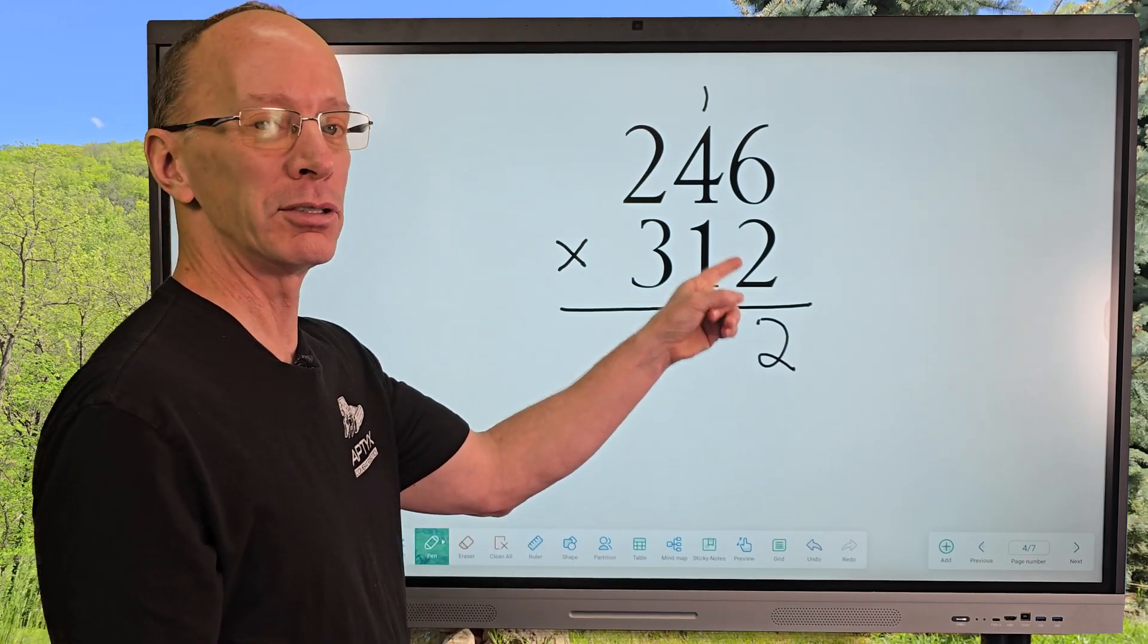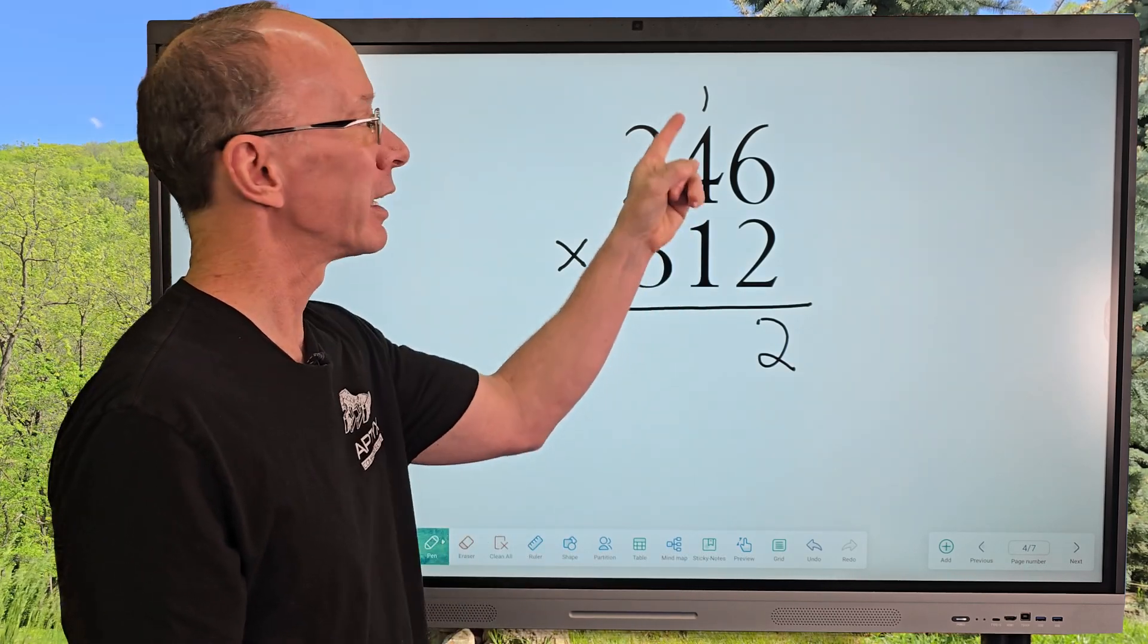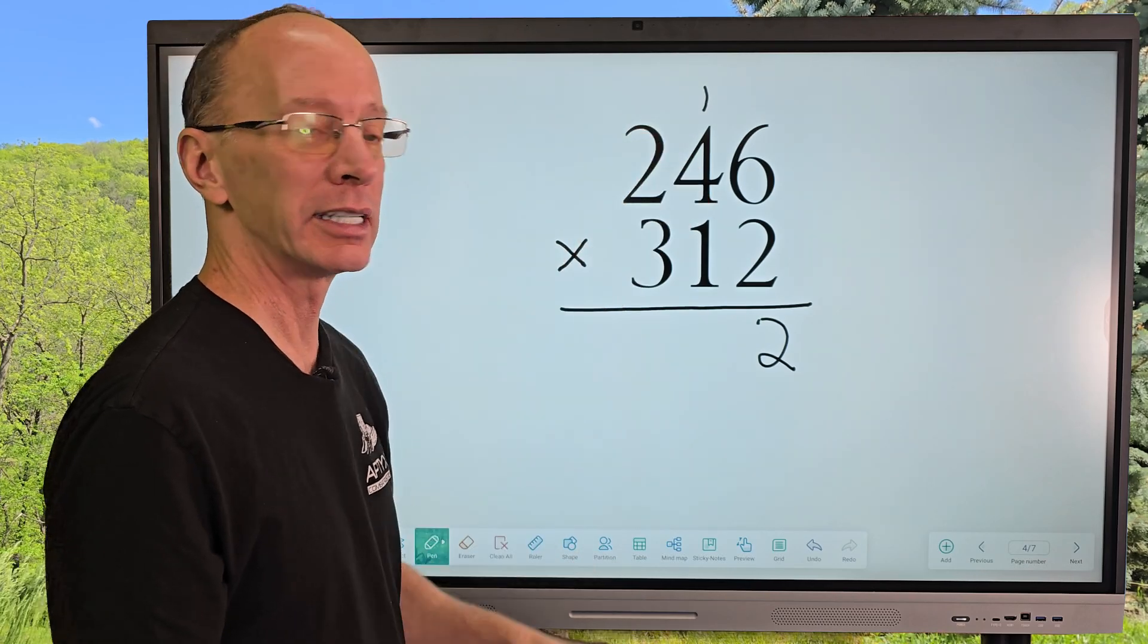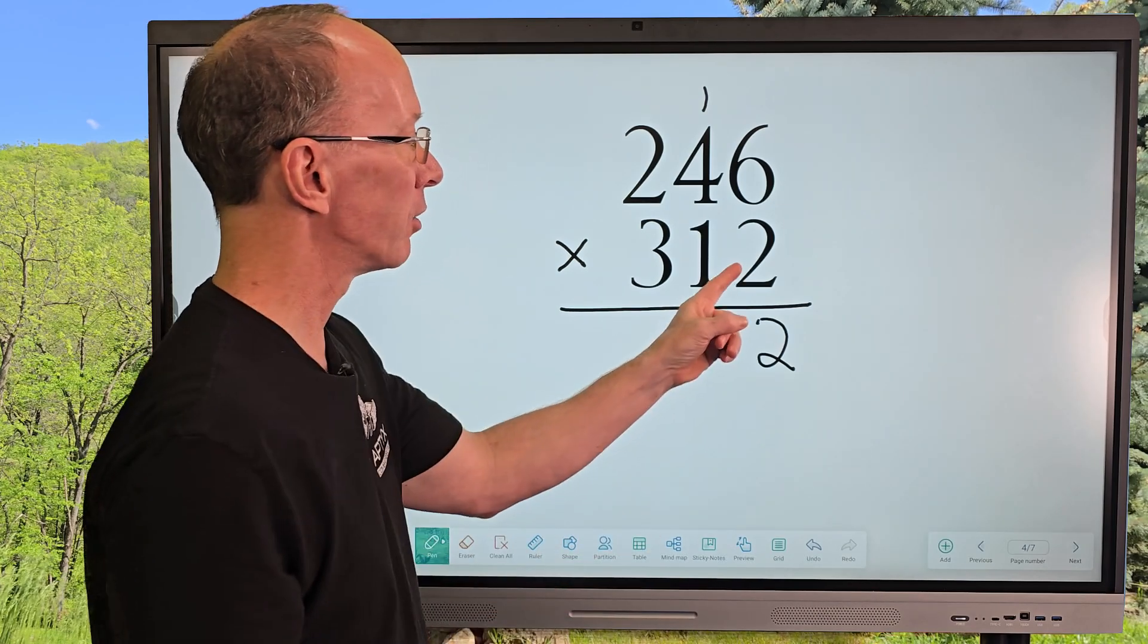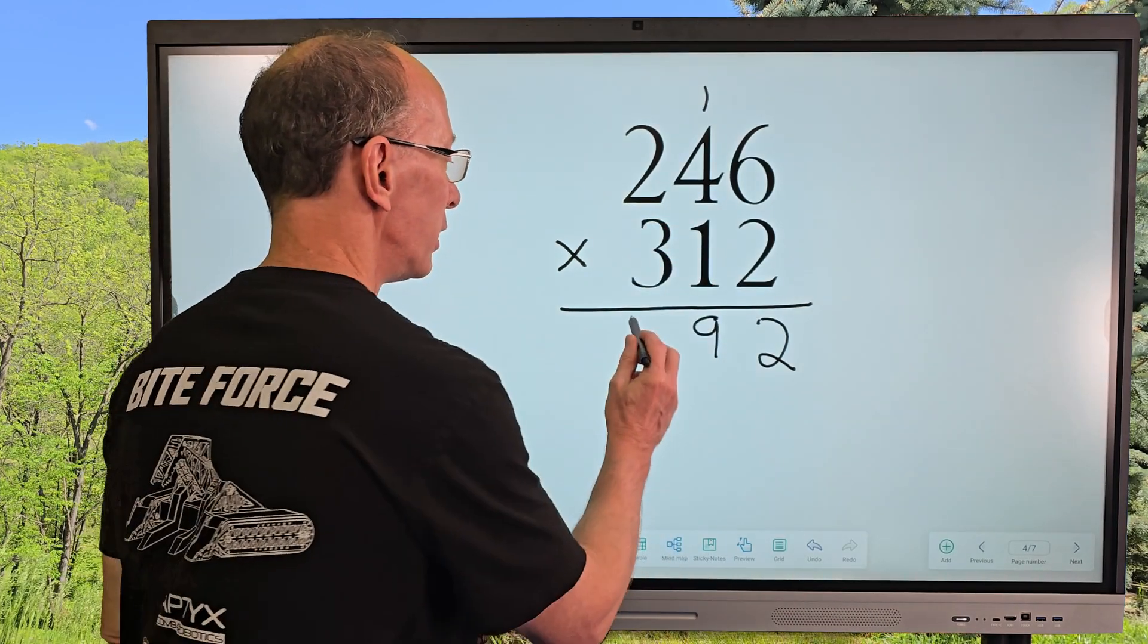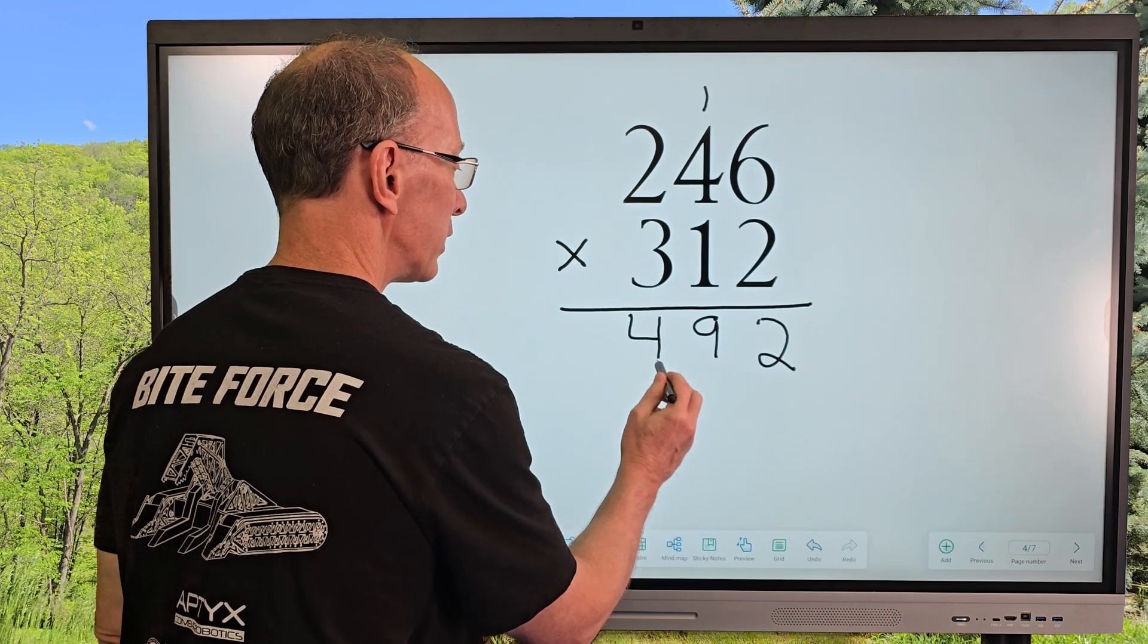So now I'm going to go ahead and multiply 2 times 4 equals 8. Now I'm going to add the 1, which would be 9. So I go ahead and put the 9 right here. And now I'm going to multiply 2 times 2 equals 4, and put the 4 right there.